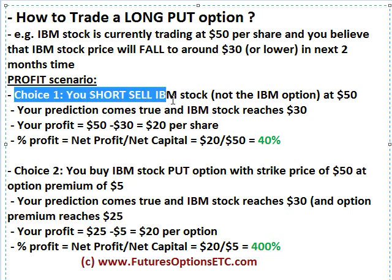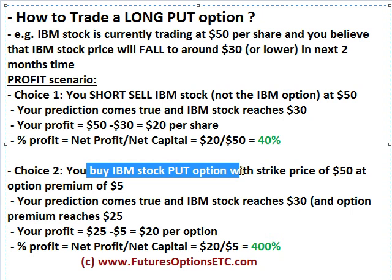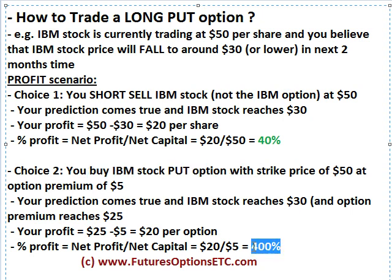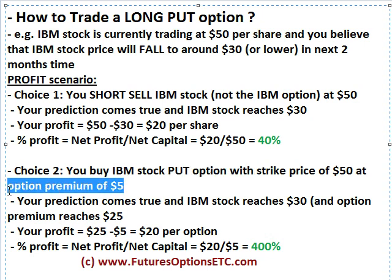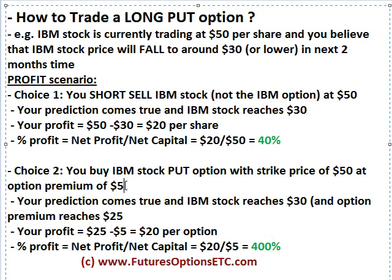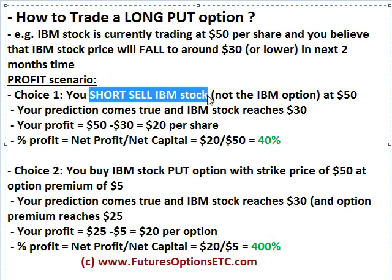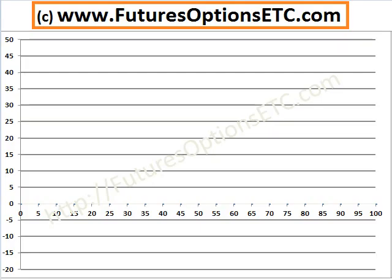Now compare these two cases. In the first case where you are short selling the IBM stock you are able to make only 40% profit. But in case of a long put option you are able to get around 400% profit. Another benefit of trading a long put option compared to a short stock is that when shorting stock you need to keep some margin money with your broker, which increases capital requirements. However, in case of a put option the only thing you need to pay is the option premium of $5.